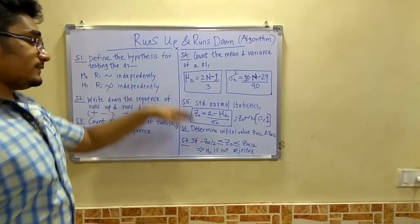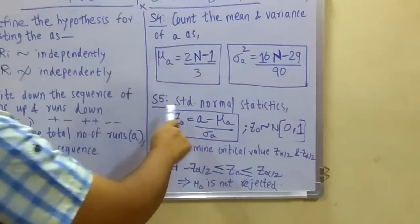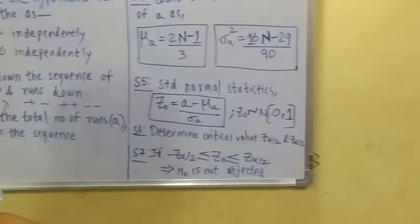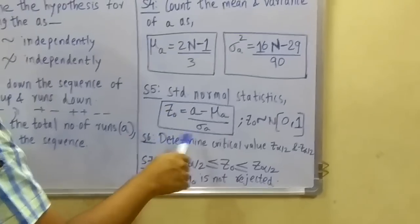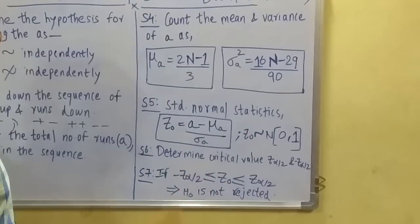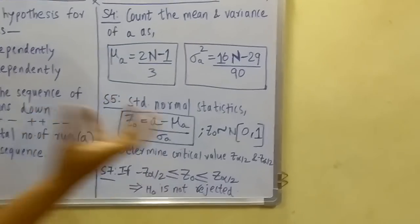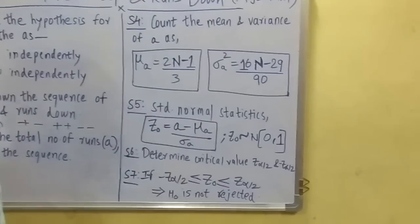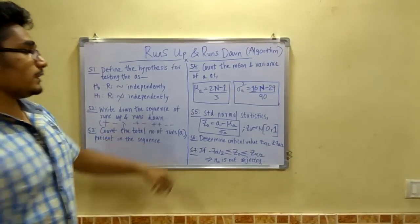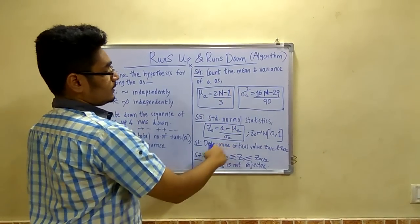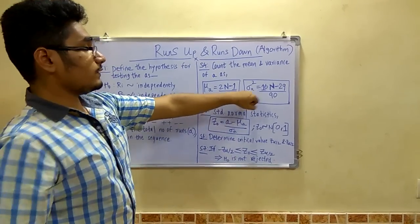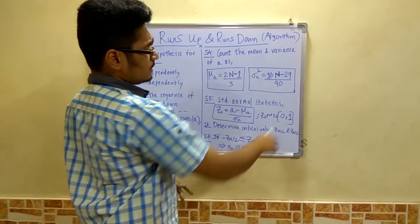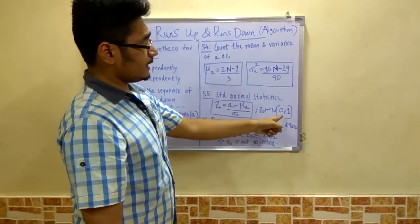So after this you have the fifth step, that is you have to calculate the standard normal test statistics. This is same as the chi square test as well as the KS test. So in this you have to compute this Z0, that is the threshold you can say, not the threshold but the value you calculate from the available data. This is A minus mu A upon sigma A. Now A you get from here, mu A from here and sigma A from here. Now this you calculate the sigma A square, we have to take the square root of this to write this. And this Z0 is normally distributed in the range that is 01.